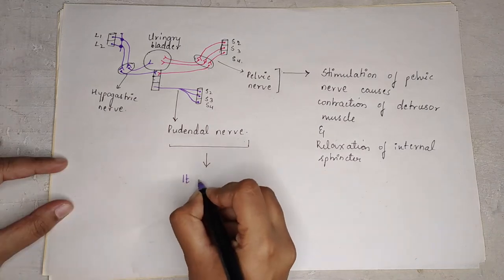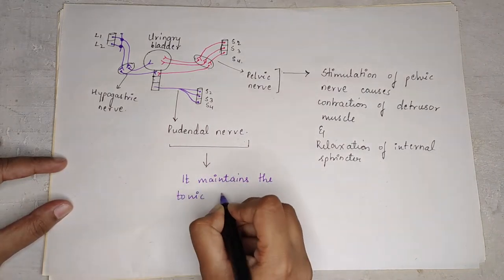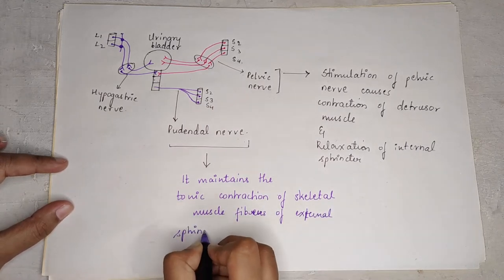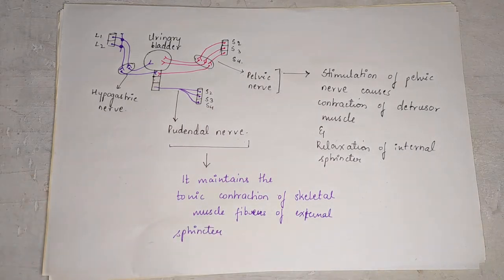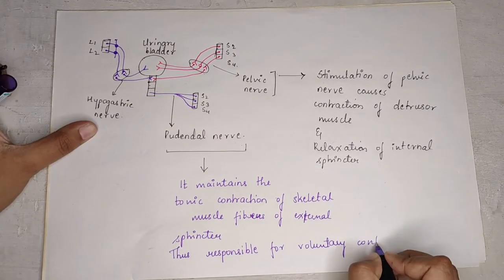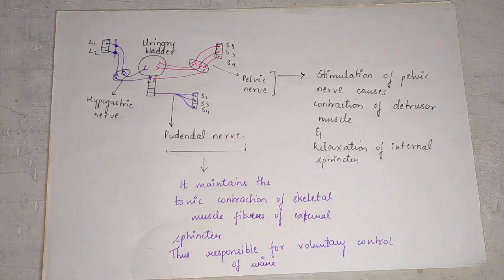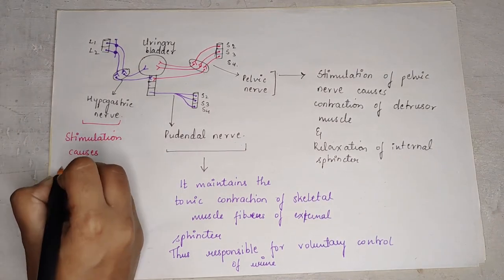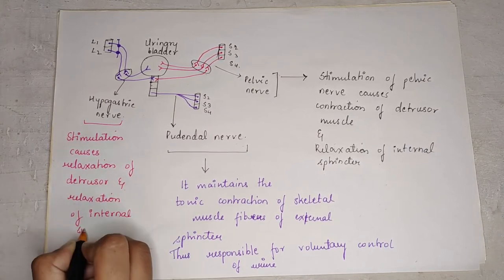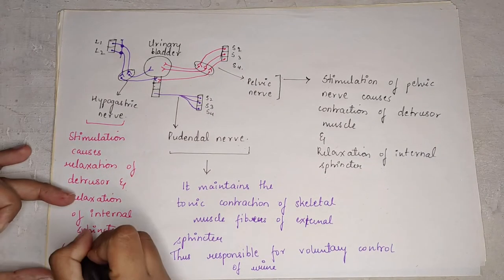The pudendal nerve maintains the tonic contraction of skeletal muscle fibers of the external sphincter, and is thus responsible for the voluntary control of urination. The hypogastric nerve, when stimulated, causes relaxation of the detrusor and relaxation of the internal sphincter — it is also called the nerve of filling.